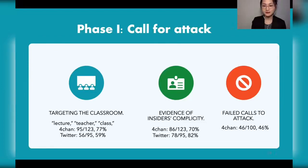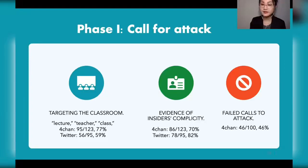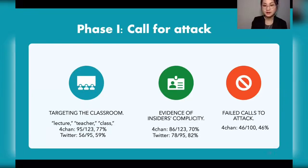We looked for two indicators of insider complicity: whether the language suggests the call is from an insider, and whether knowledge shared about the meeting could only come from an insider. Attackers also tell people to adopt certain names to avoid vetting. Combining information from meeting links and post texts, we identified that 70% of Zoom Bombing threads on 4chan appear to have been posted by insiders. For Twitter, 82% of Zoom Bombing tweets were posted by insiders.